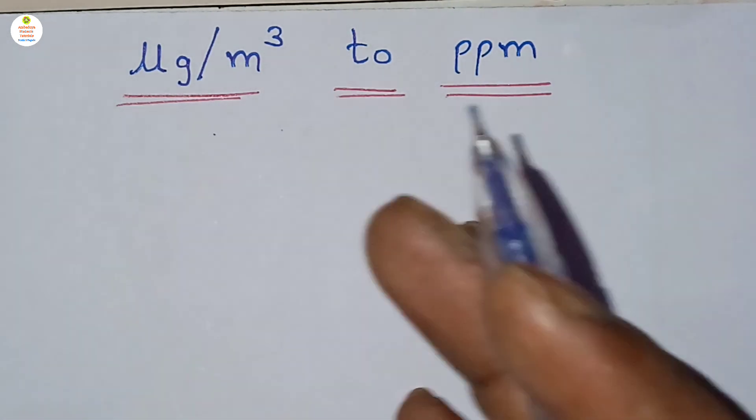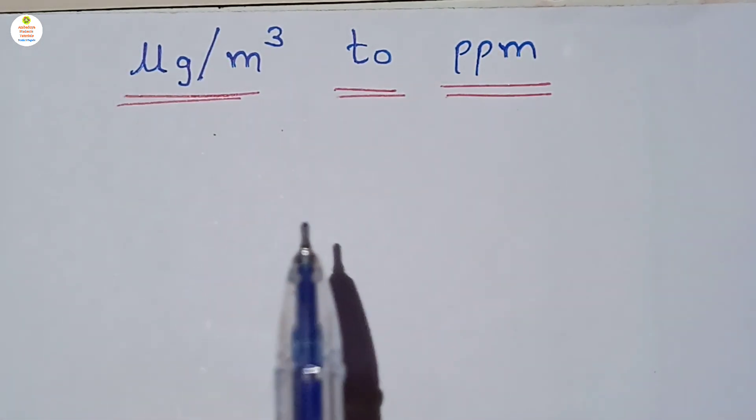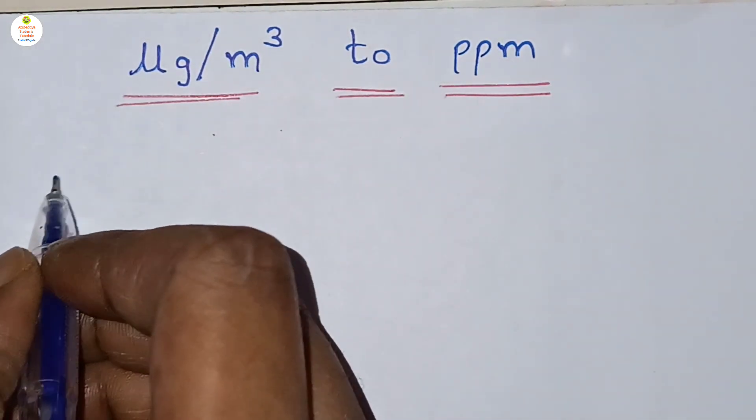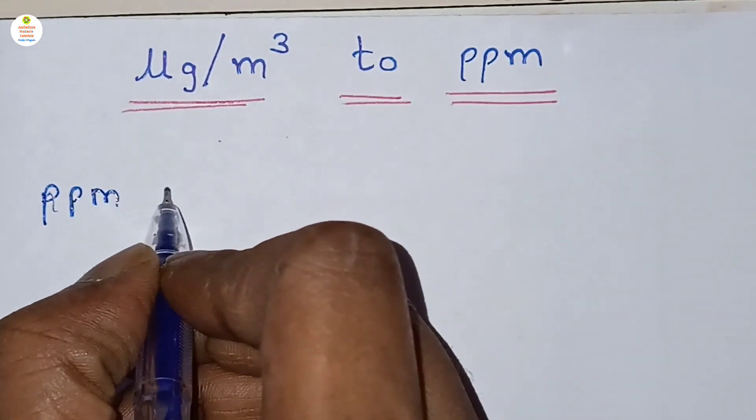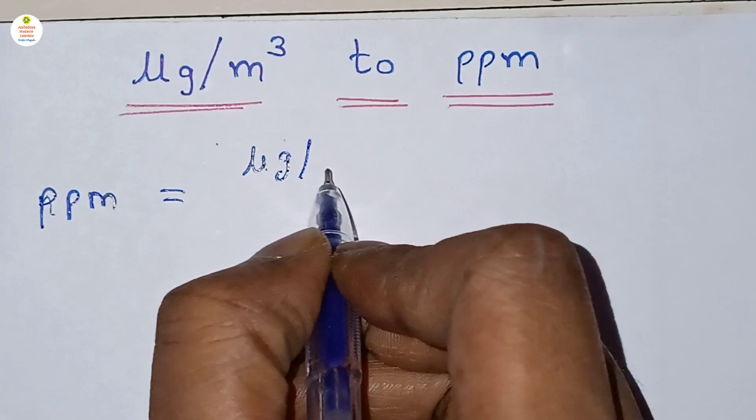Let's first see here the formula, then I will explain you the formula, then after that we will see one example to understand how to convert microgram per meter cube to ppm. So here see, ppm formula is ppm equal to microgram per meter cube.